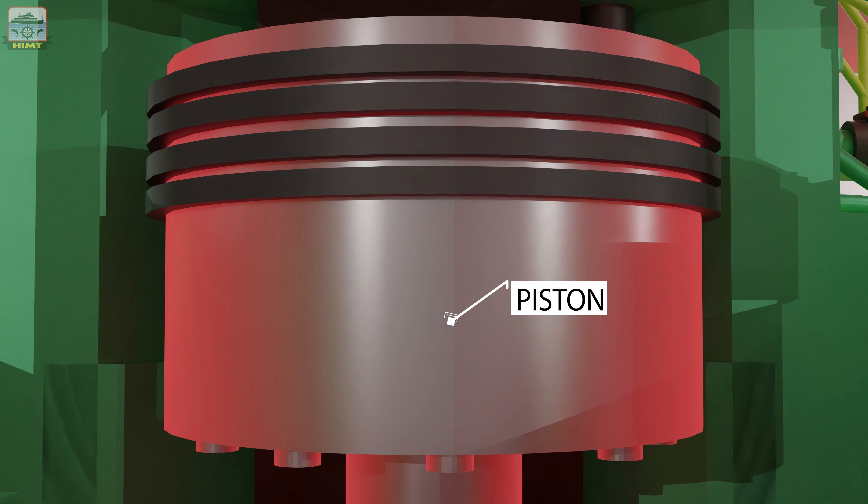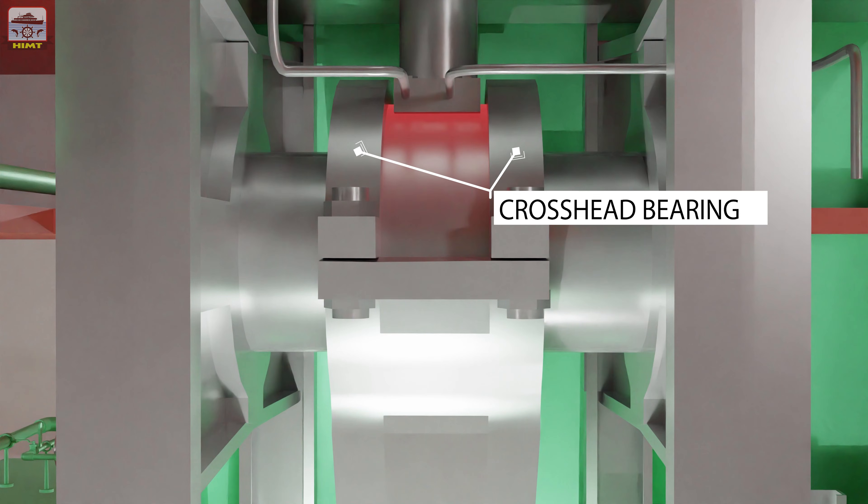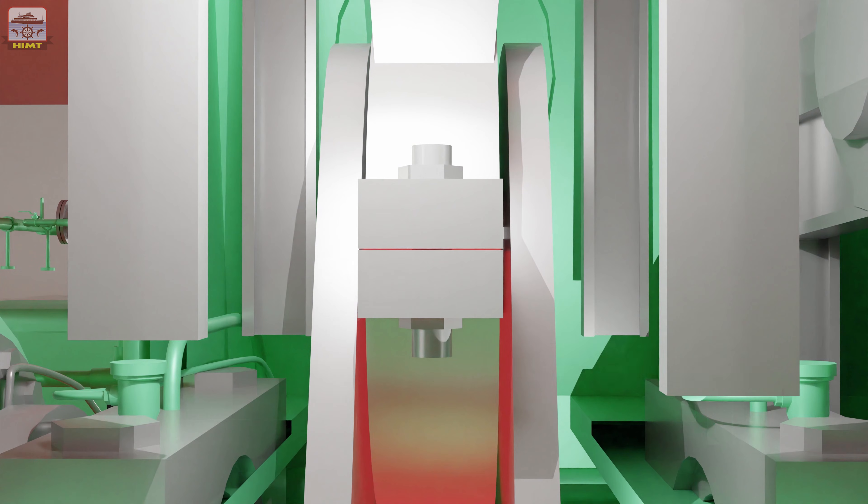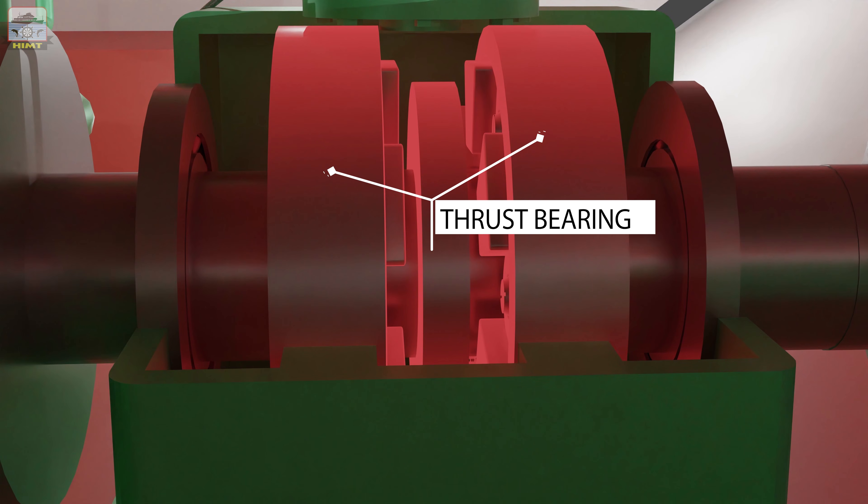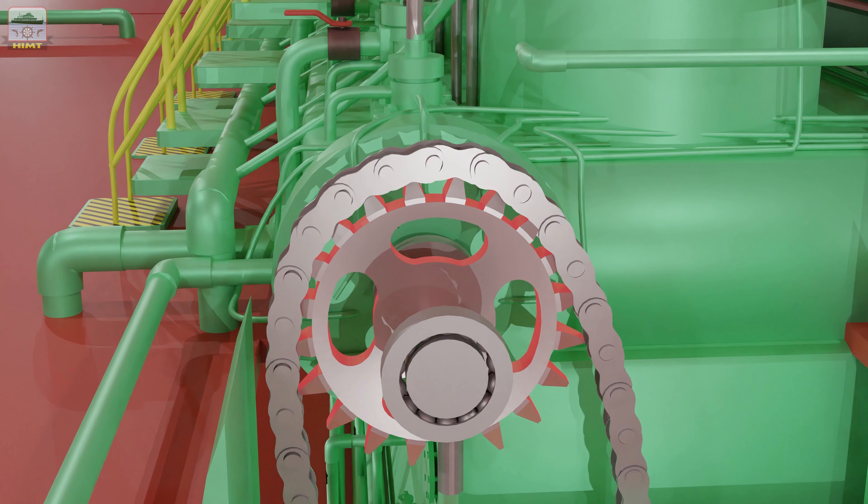The system cools the piston, lubricates the main bearings, the crosshead bearings, the crosshead guides, the crank pin bearings, the thrust bearings, and the camshaft drives.